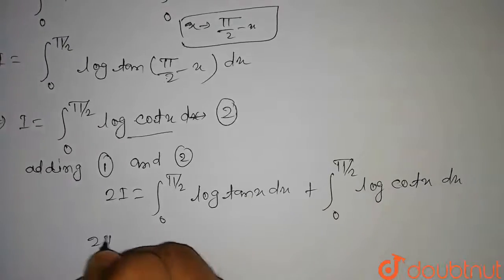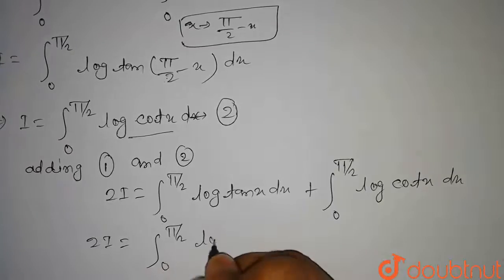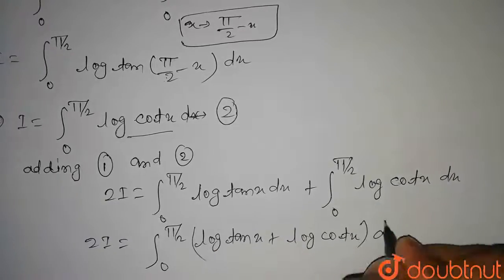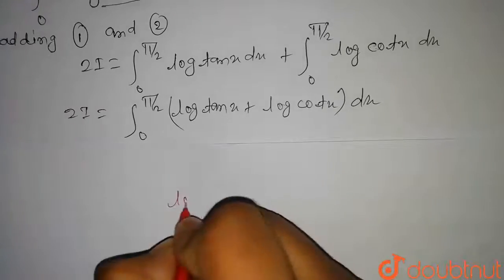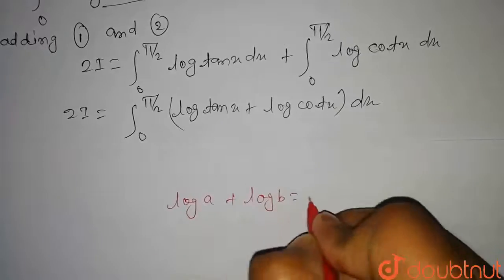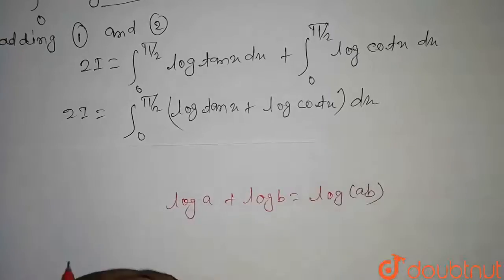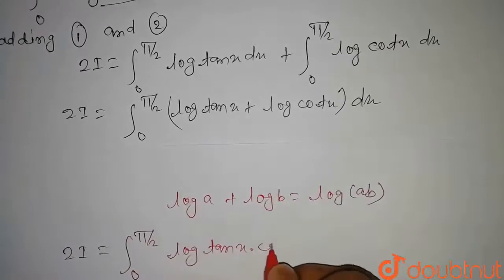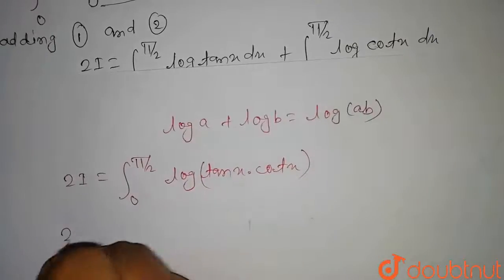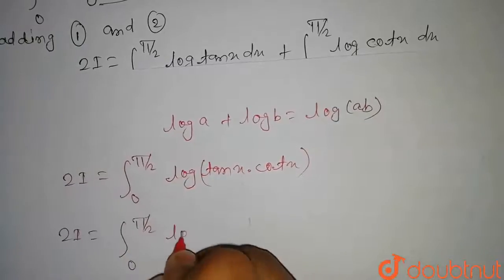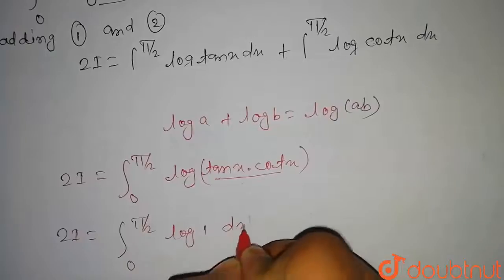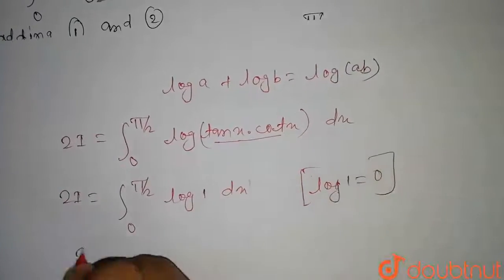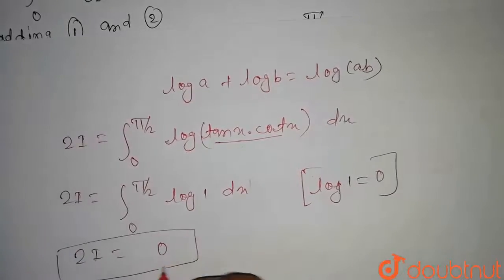So we can write 2I is equal to integral 0 to π/2 of log(tan x · cot x) dx. Since tan x · cot x equals 1, we get 2I is equal to integral 0 to π/2 of log(1) dx. We know that log(1) is equal to 0. Hence, 2I is equal to 0, and therefore I is equal to 0.